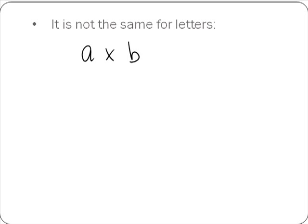If we go back to our original expression, what we are trying to find is what a multiplied by b gives us. We don't know the value of a and we don't know the value of b, so we can't find the value of a multiplied by b. What we do is we simply drop the multiplication sign and write the letters together. So if we want to multiply a by b, we get ab.